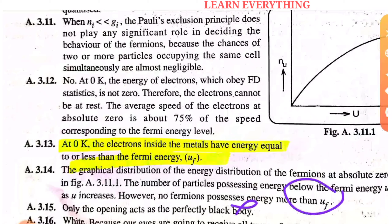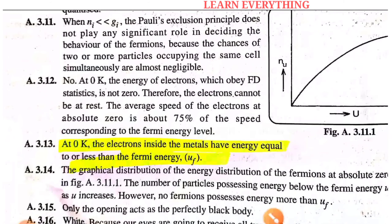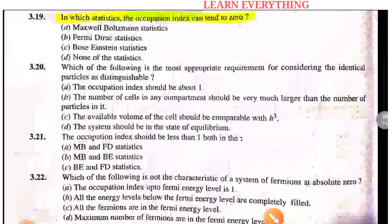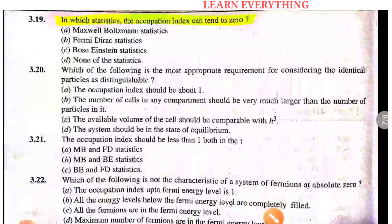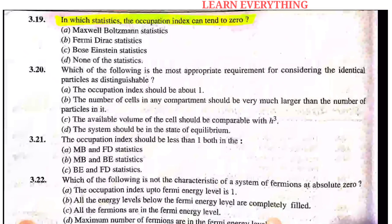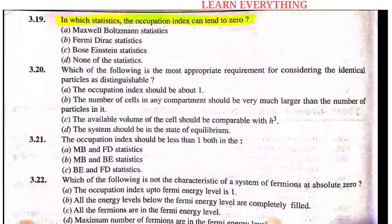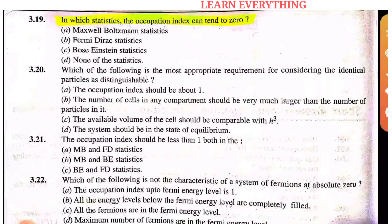Now let's look at MCQ questions. First question: In which statistics does the occupation index tend to 0? The answer is MB (Maxwell-Boltzmann) statistics.